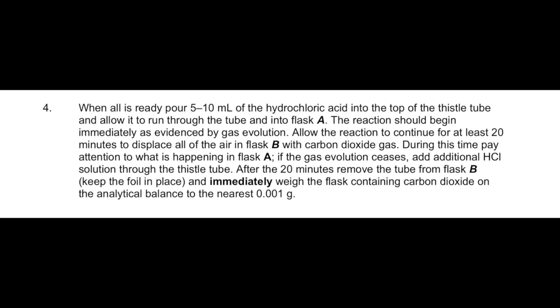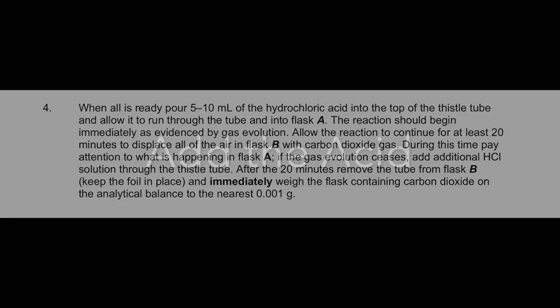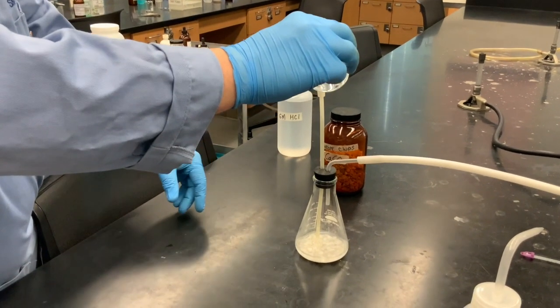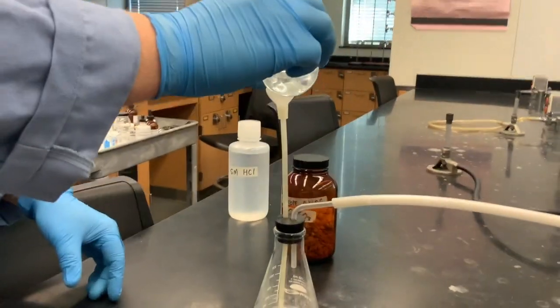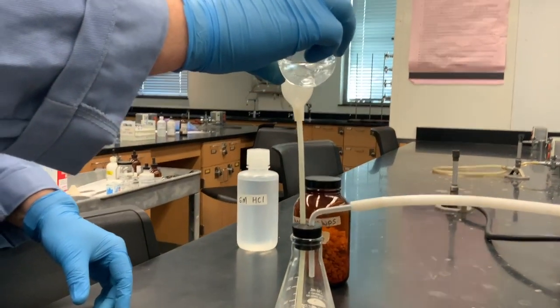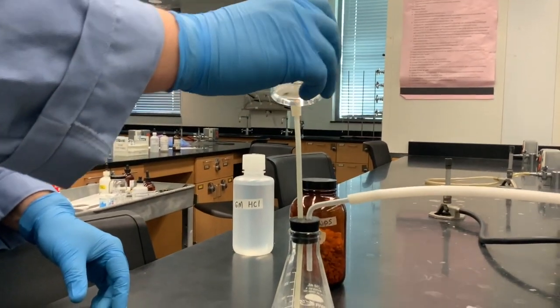When everything is all set up we're ready to deliver our acid through the thistle tube. The acid is going to be poured carefully down the thistle tube into the flask and the CO2 begins to form as the acid hits the calcium carbonate chips.